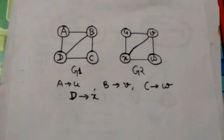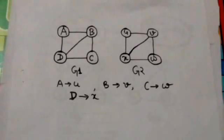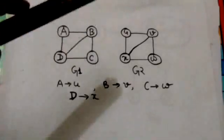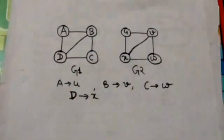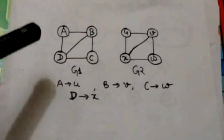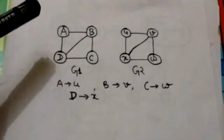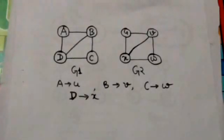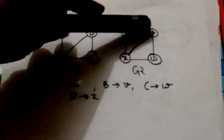There is an edge between vertices A and B in G1. In graph G2, there is an edge between the vertices corresponding to vertices A and B, that is between the vertices U and V. There is an edge between vertices B and C in G1. In graph G2, there is an edge between the vertices corresponding to vertices B and C, that is between the vertices V and W.